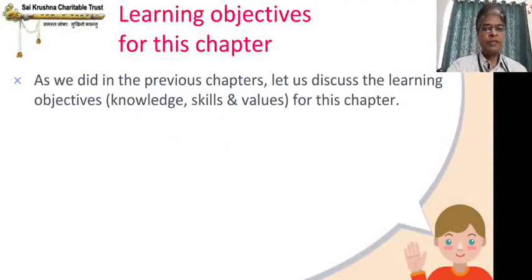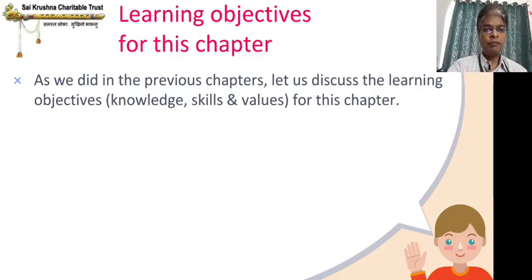Learning objectives — as we did in the previous chapters — let us discuss the learning objectives: knowledge, skills, and values for this chapter. This is what we do in each and every chapter. We have already done six chapters — three prose and three poems. By now I hope all of you understand what is knowledge, what is a skill, and what is a value. Let us go through them again.